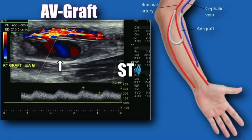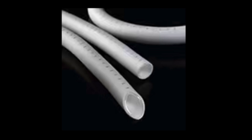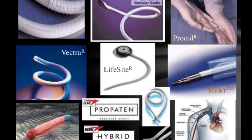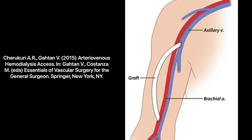An AV graft is also created surgically by using a small hollow synthetic tube that connects the artery to the vein. The material typically used for an AV graft is polytetrafluoroethylene, or a Gore-Tex tube. Grafts are used as opposed to fistulas when the patient's native vasculature is not suitable for fistula creation.